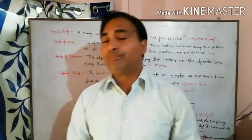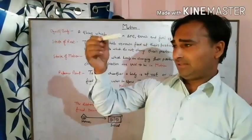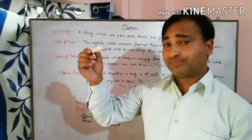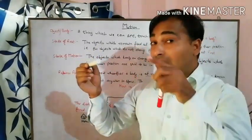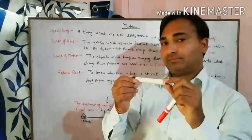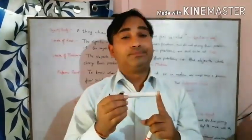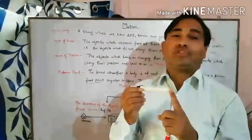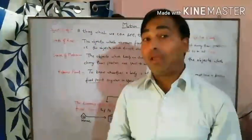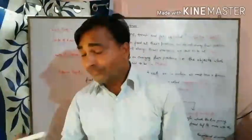In this universe, no object is absolutely at rest and no object is absolutely in motion. For example, suppose this marker is kept on the Earth's surface — this marker appears to be in rest position. But in planetary motion, Earth revolves around the Sun. If we consider this marker and Earth with respect to the Sun, then Earth as well as this marker is also in motion.